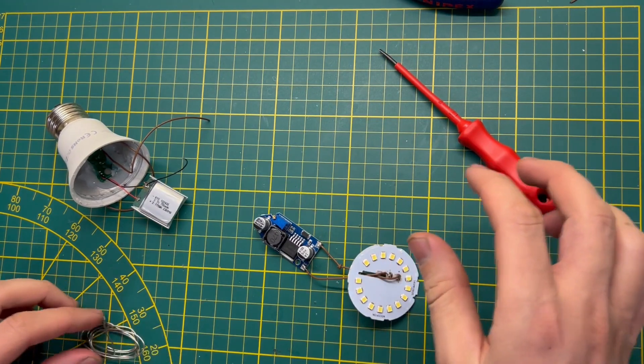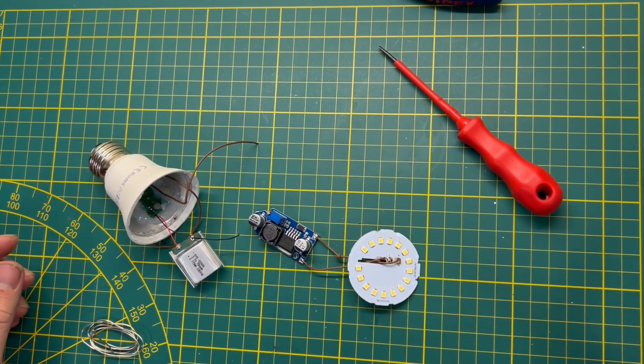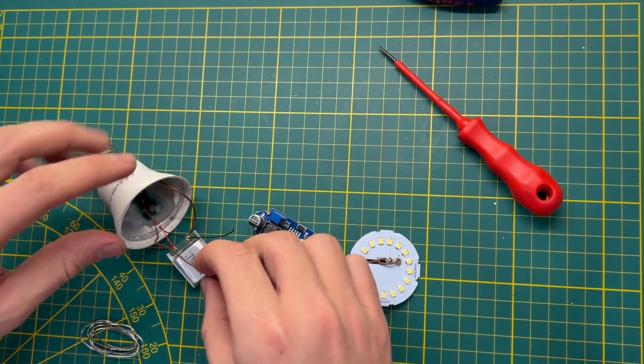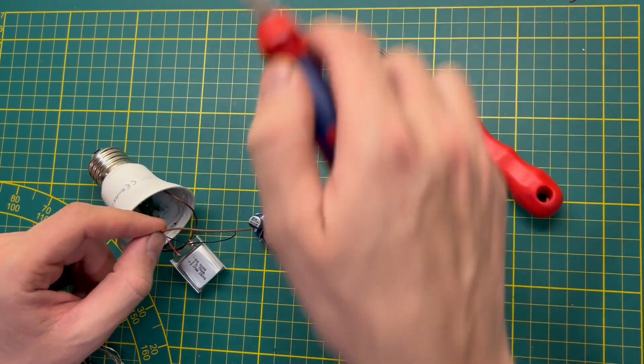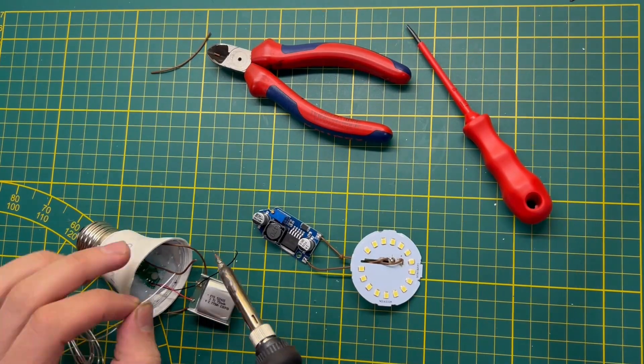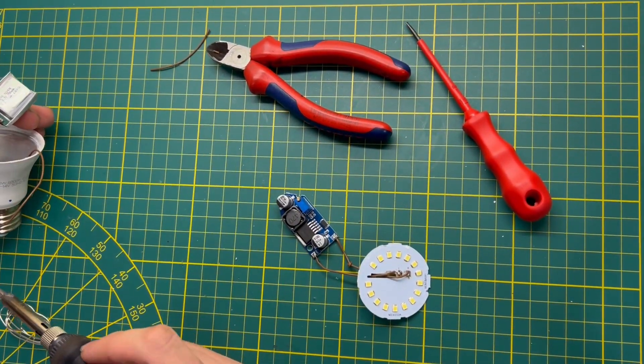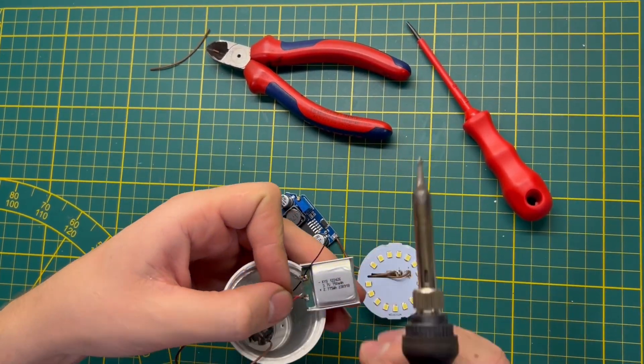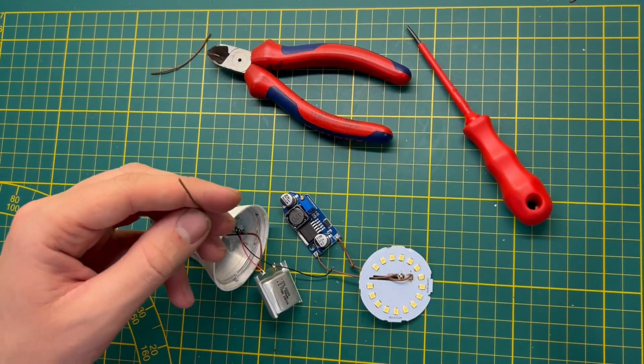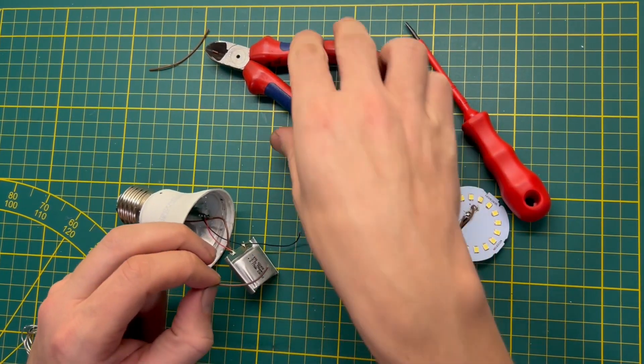Now we have to connect all these parts together and try to assemble and put everything inside the lamp and close it. Let's connect our switch to the battery.